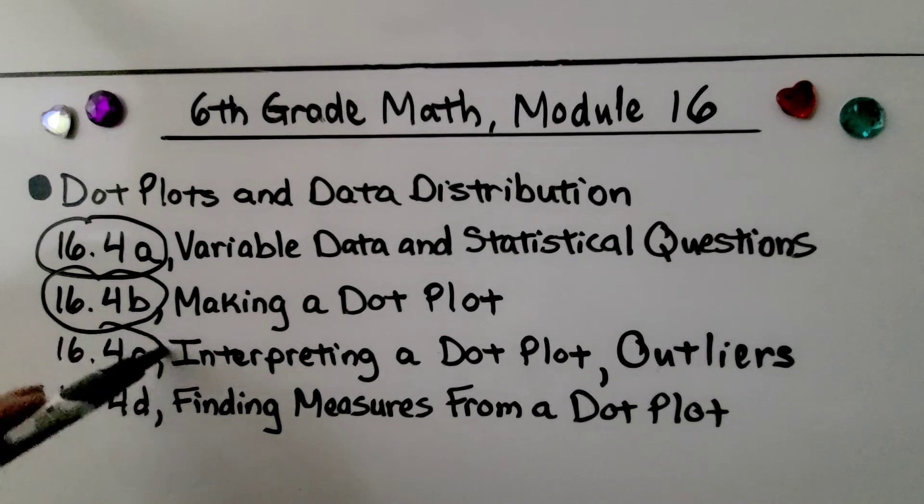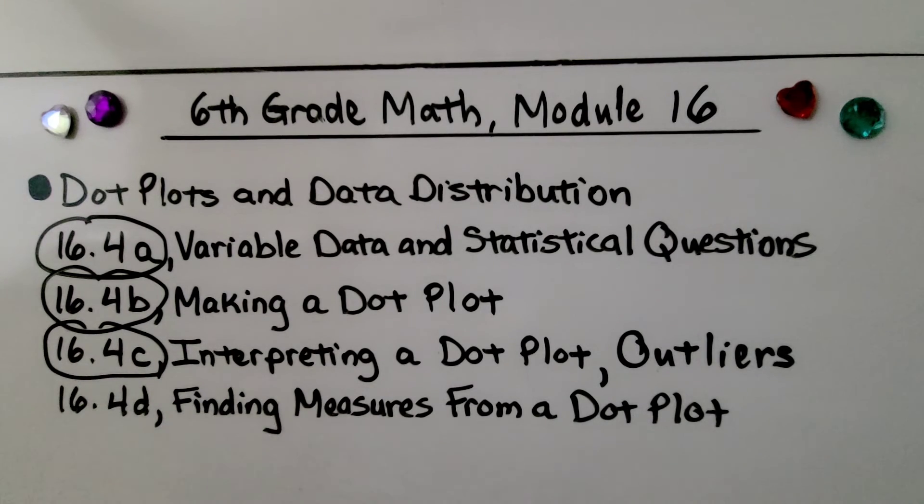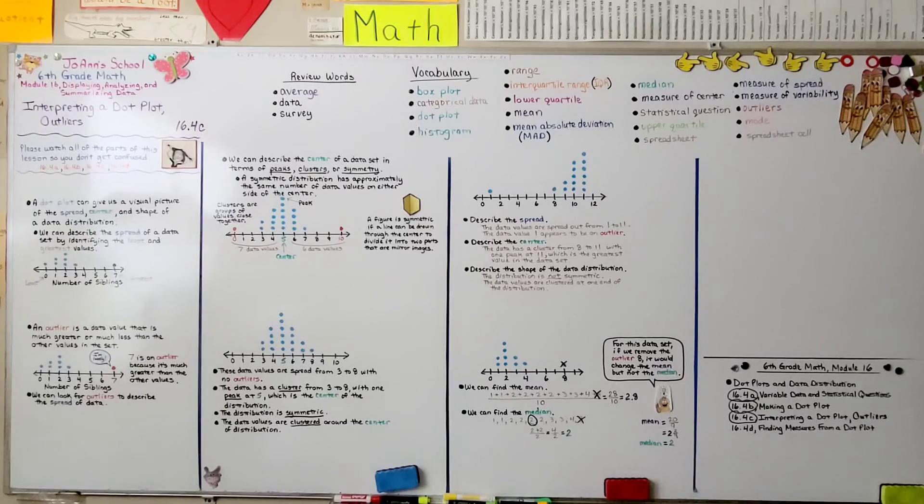Okay, we finished the third part. We've got one last part to this lesson, finding measures from a dot plot. So now you know all about the lonely outlier. Have a really nice day, and join me for the last part of the lesson. Bye!